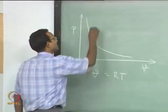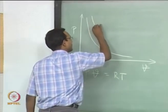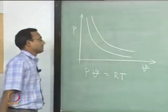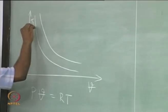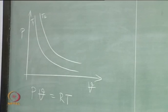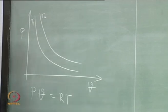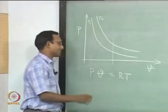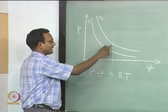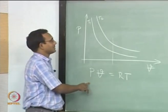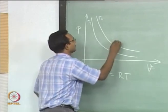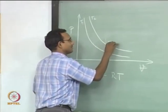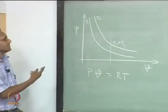For some other temperature we get another hyperbola. Calling them T1 and T2 — to determine which is higher temperature, fix the volume and check which curve gives higher pressure. Higher temperature means higher pressure, so T2 is the higher temperature curve, sitting above T1. You should know these kinds of curves.